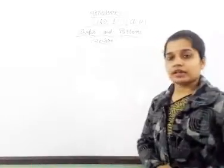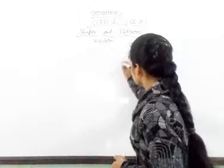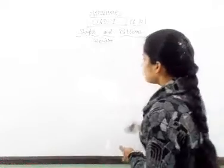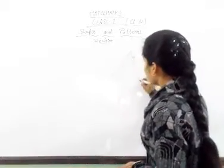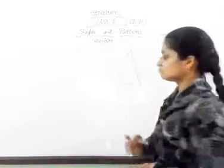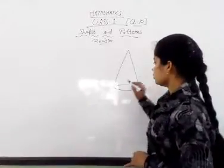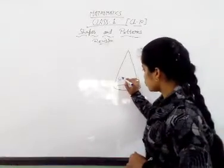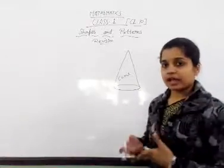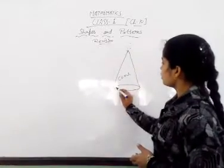Now we make another shape — a solid. All plane shapes are called 2D shapes, and all solids are called 3D shapes. Identify it — which 3D shape is it? It is a cone. You can make objects with this shape: birthday cap, ice cream, crackers.